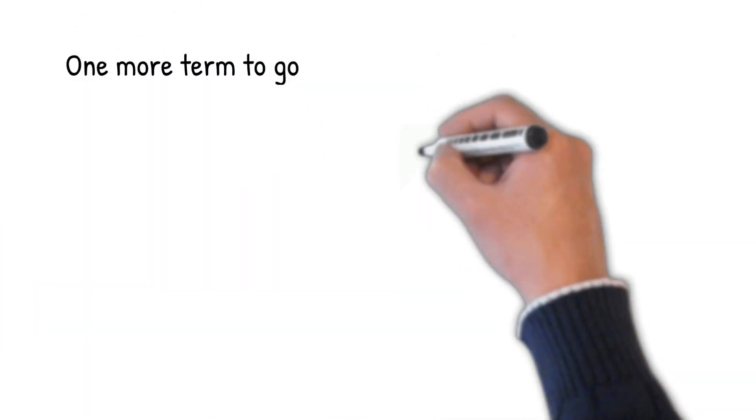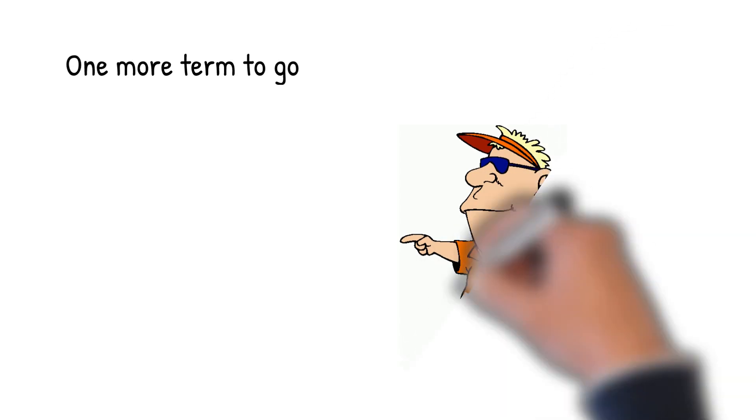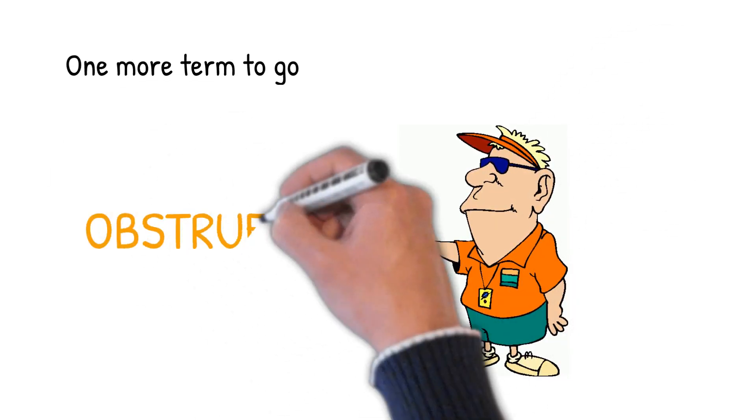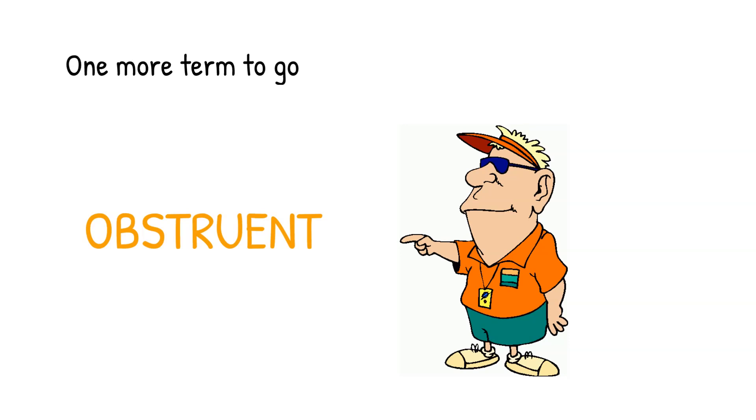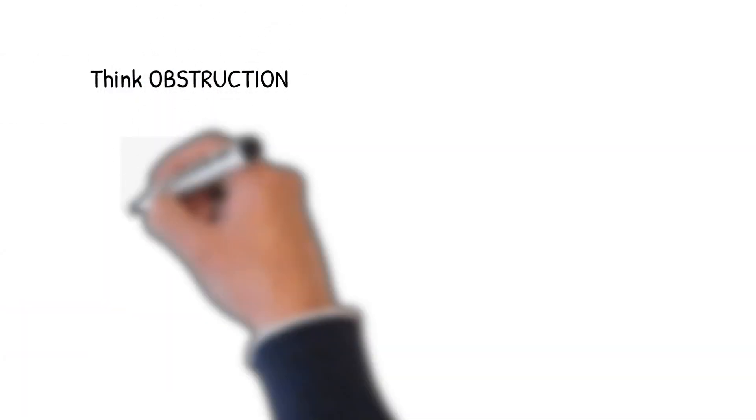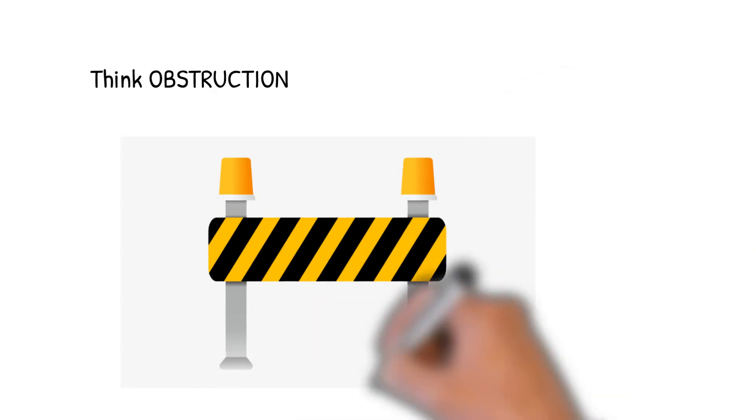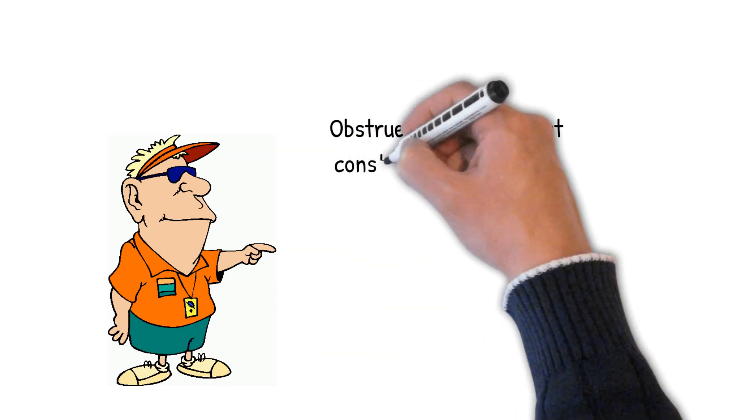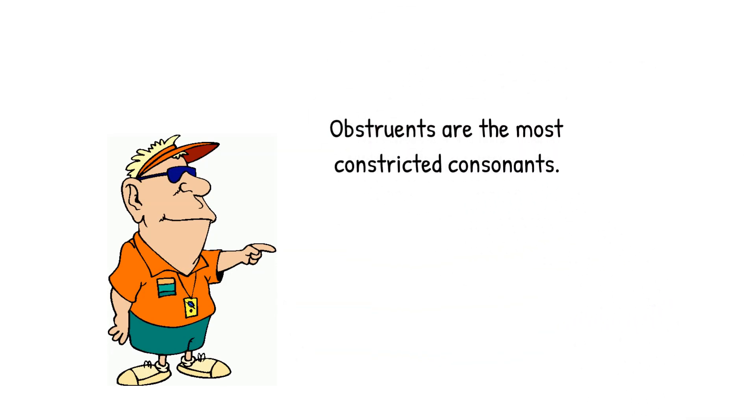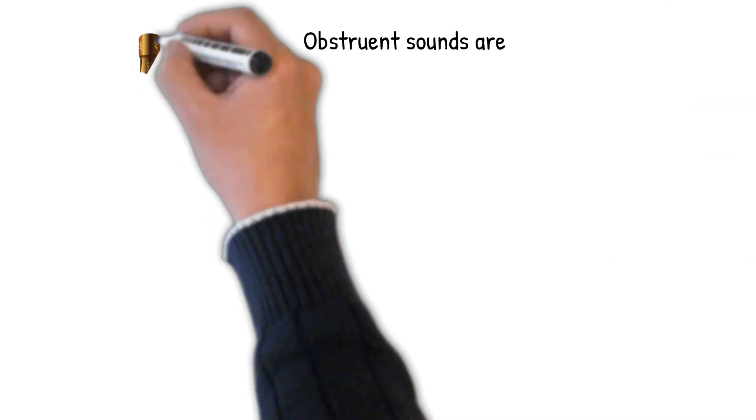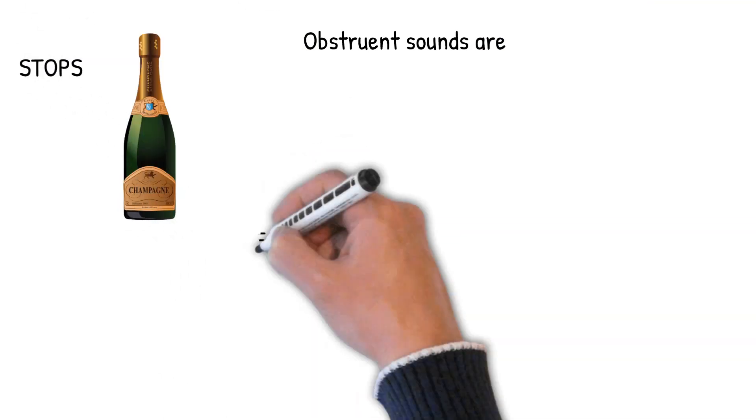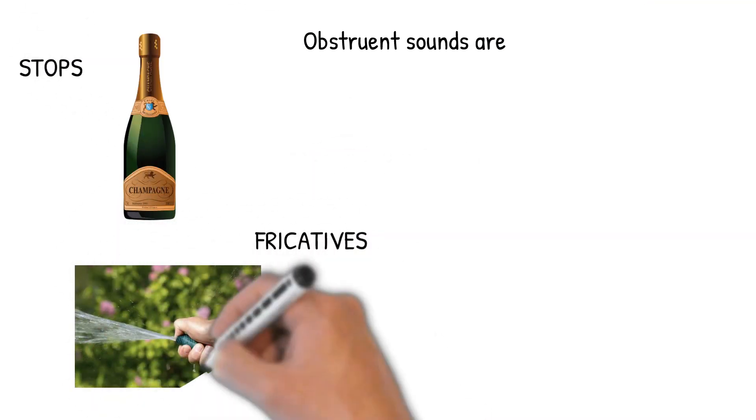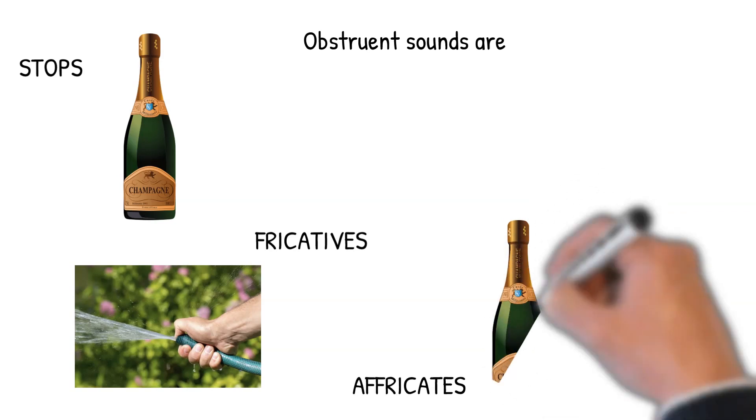Okay, we're almost done. There's just one more term that I'd like to make sure we know, and that's the term obstruent. The term obstruent is pretty easy to remember if you keep in mind the word obstruct or obstruction. And in linguistics, we use the term obstruent to group together the most obstructed consonants. That is, we use the term obstruent to group together stops, fricatives, and affricates.